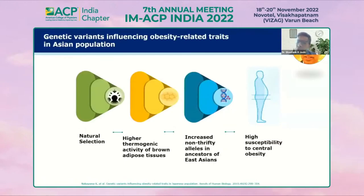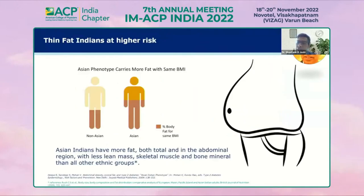In the Asian population, representing India, there is a natural selection and a clear genetic variant which influences obesity-related traits. This leads to higher thermogenic activity of the brown adipose tissue, an increased prevalence of non-thrifty alleles in the ancestors of East Asians and South Asians, and a predilection to central obesity. The Asian phenotype carries more fat with the same BMI compared to the non-Asian phenotype.